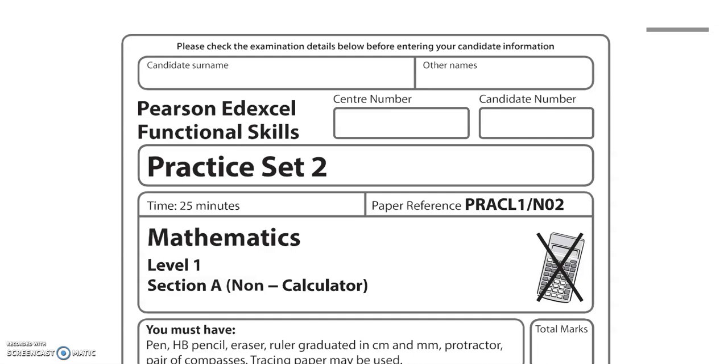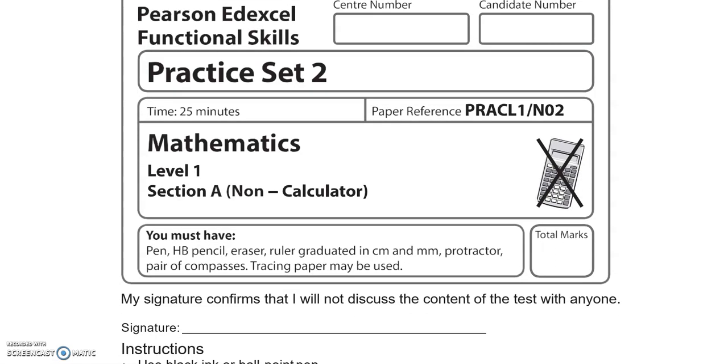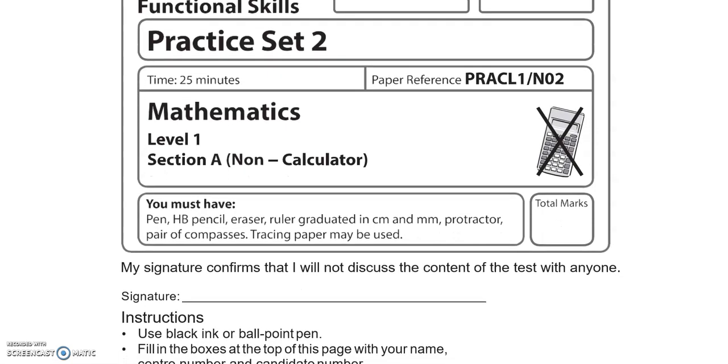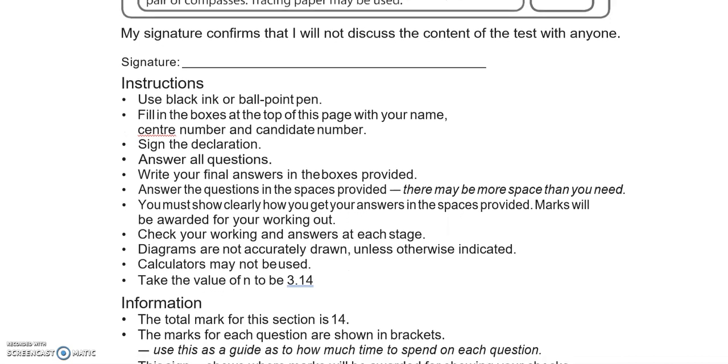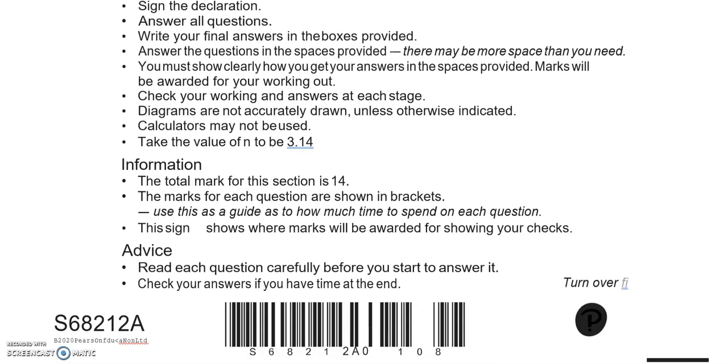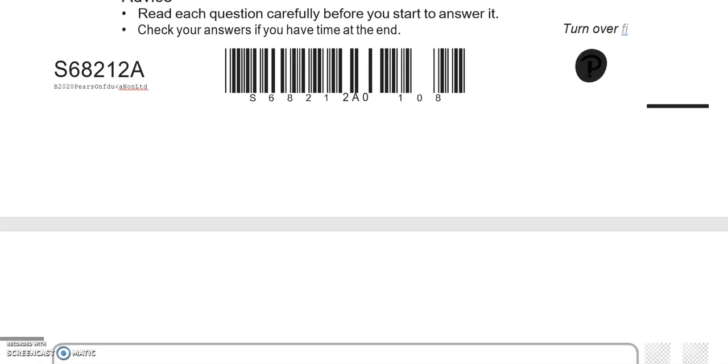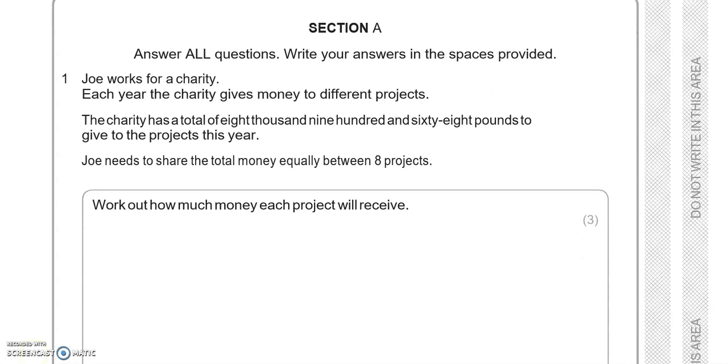This is a Level 1 Functional Skills Maths paper from Edexcel. It's split into two parts. In part 1 you can't use a calculator. There is a total of 14 marks for this part. In the second part you can use a calculator. Answer all questions, write your answers in the spaces provided.